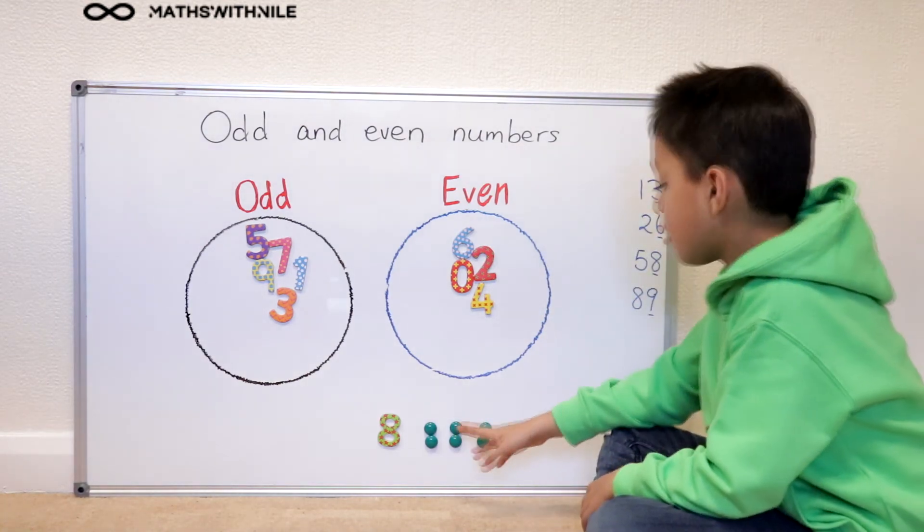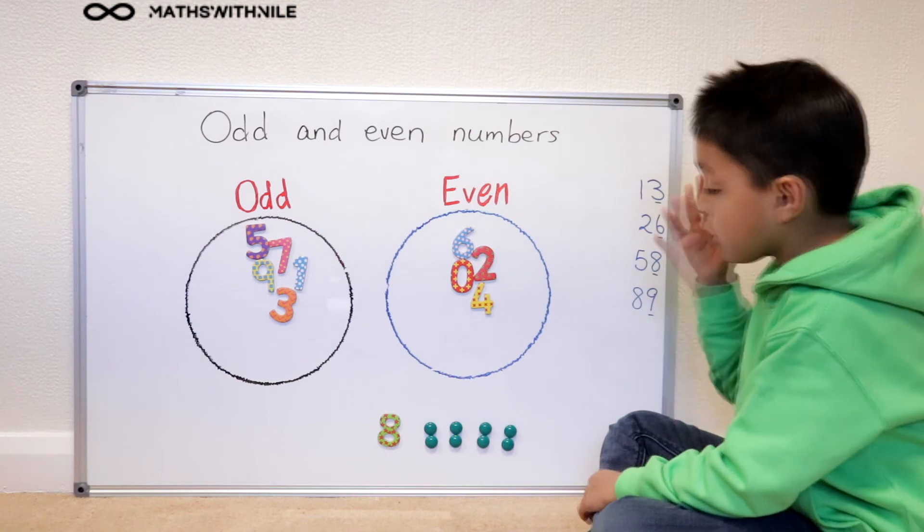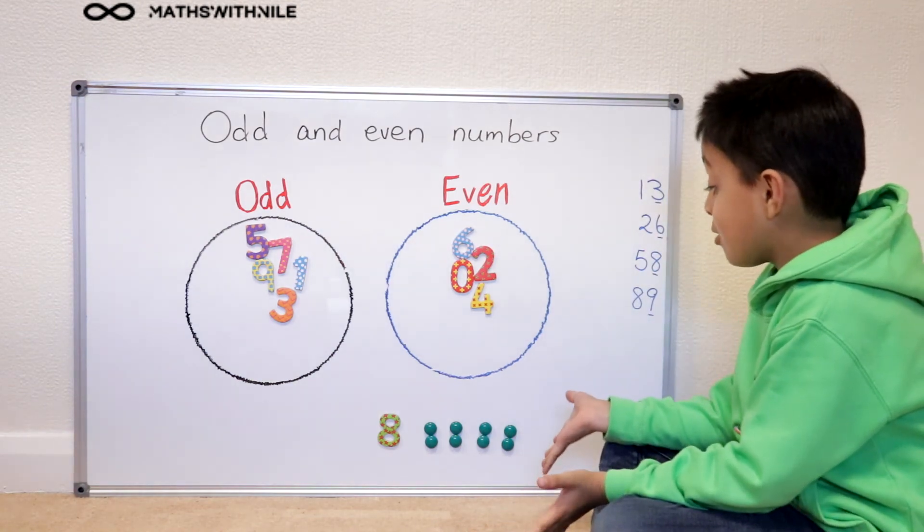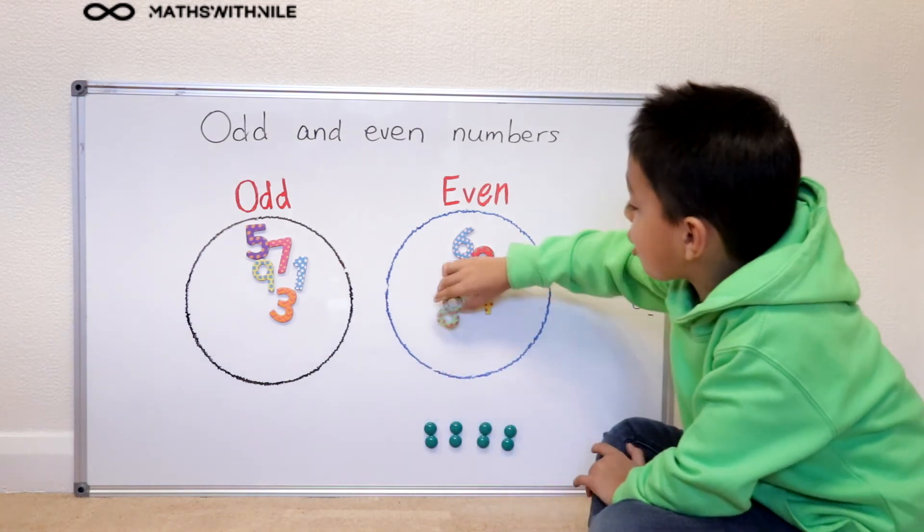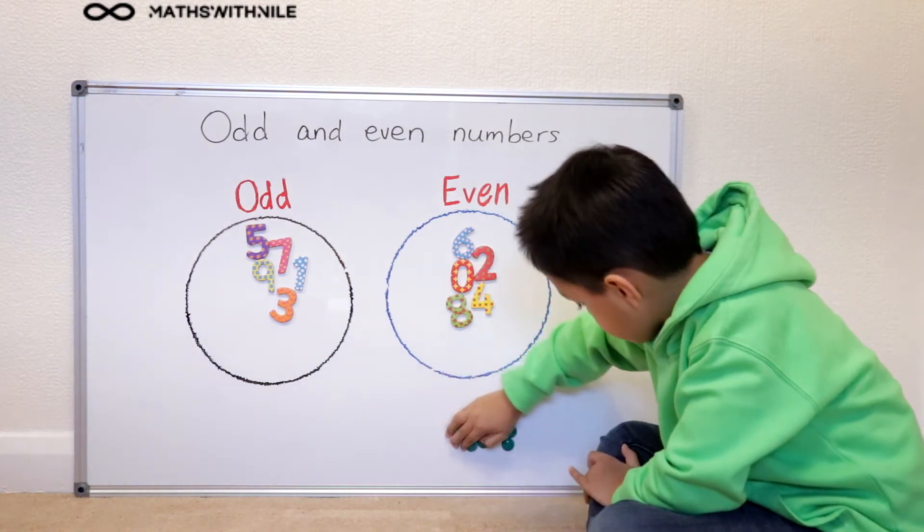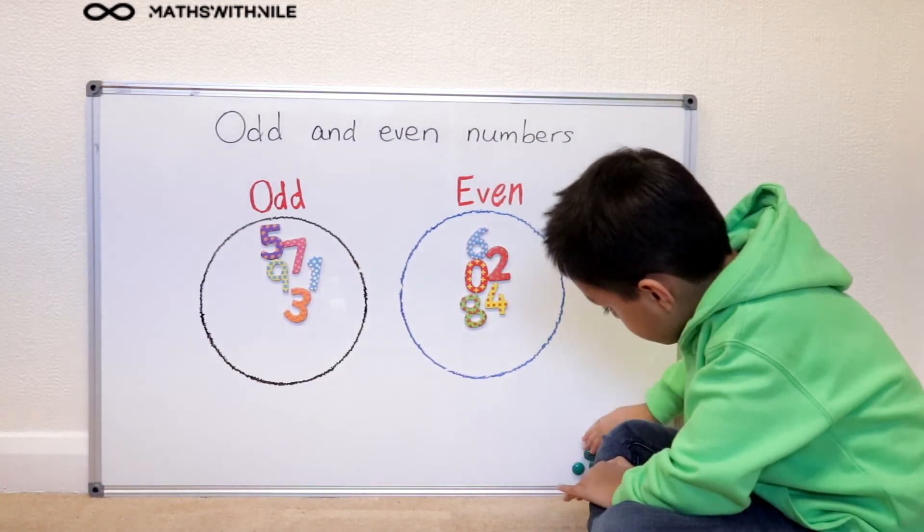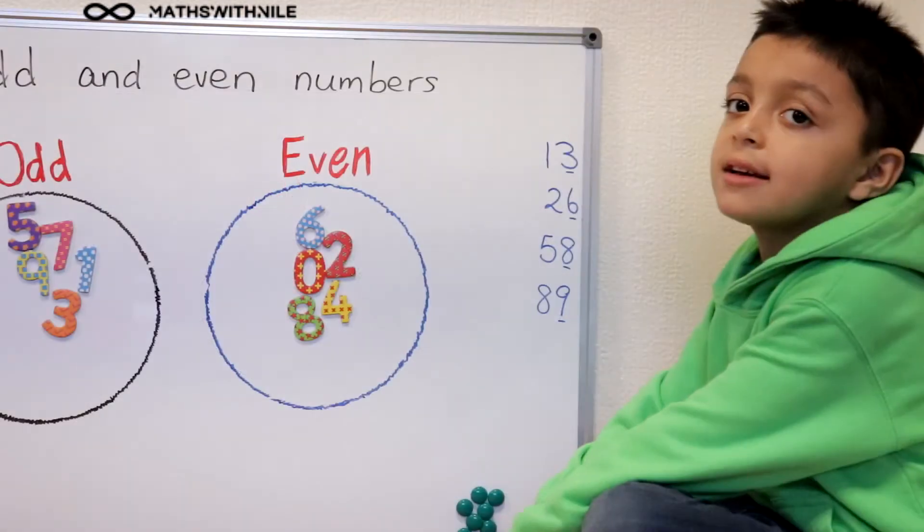So we've got four lots of twos and zero lots of ones. So eight goes here. So I'm going to put my eight counters back where they belong.